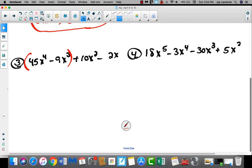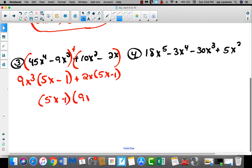So I'm going to group like this, and my GCF here is going to be a 9x cubed, and I'll be left with a 5x minus 1. And then here I'm going to factor out a 2x, I think, leaving me a 5x minus 1. Did you hear it? I repeated myself. And so I'll have a 5x minus 1 in one quantity, and a 9x cubed plus 2x.